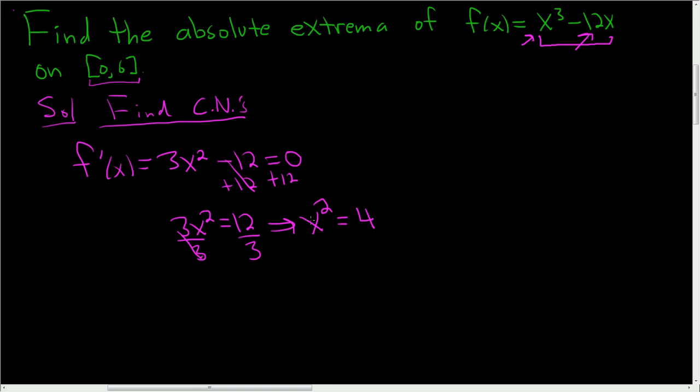Now x is being squared, so to solve for x, we take the square root of both sides, and we get x equals plus or minus 2.